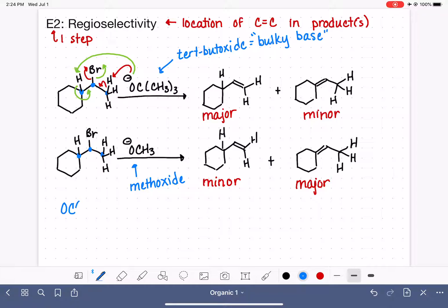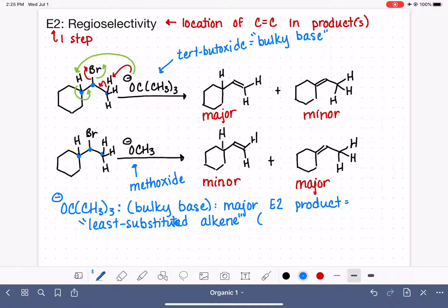If we are using tert-butoxide as our base, and tert-butoxide is the only base that actually does this, this is our bulky base, and it is our only base that does this. The major product of the E2 reaction is what we call the least substituted alkene. The least substituted alkene has the least R groups, the least carbon bonds, and the most hydrogens on the alkene.